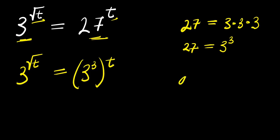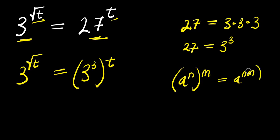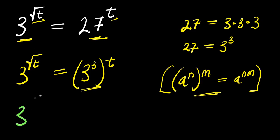Now, if you have a power m raised to the power of n, this equals a power m times n. So we apply this identity right here. That means what we are going to have is 3 power square root t, and this equals 3 power 3 times t, that is 3t.